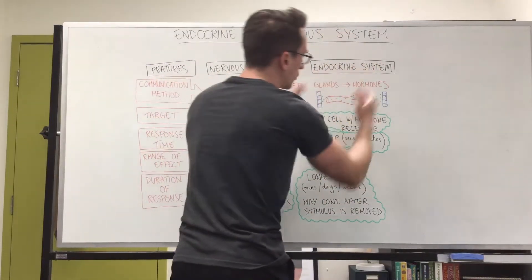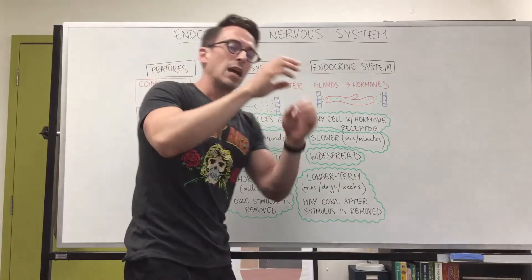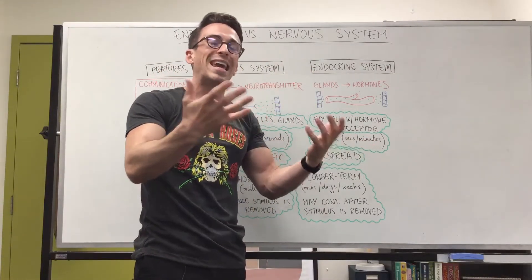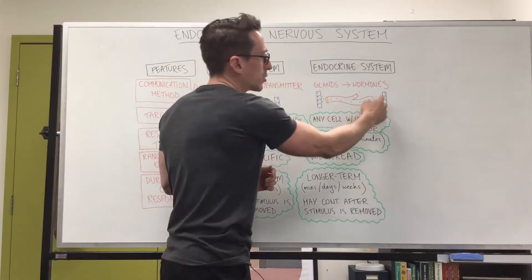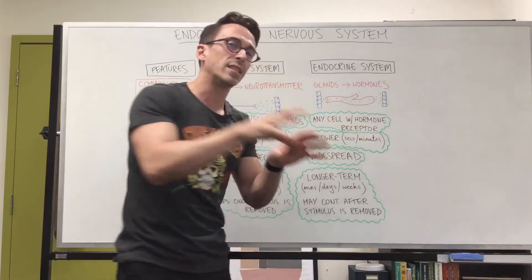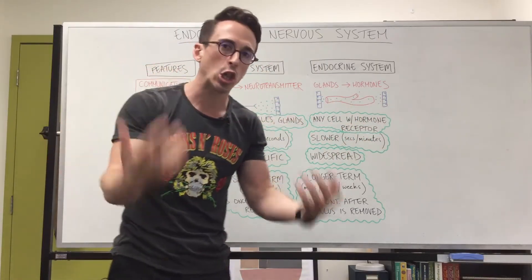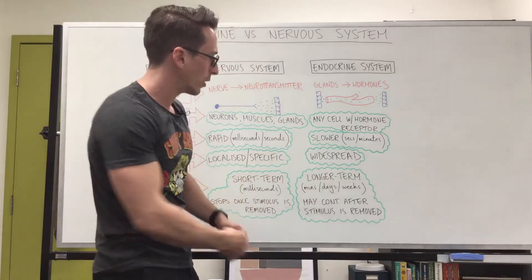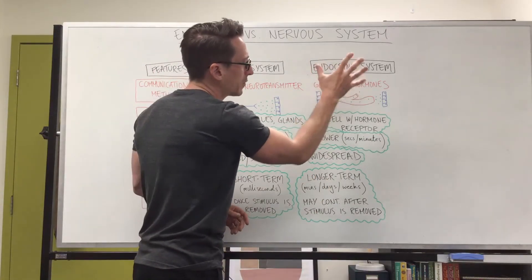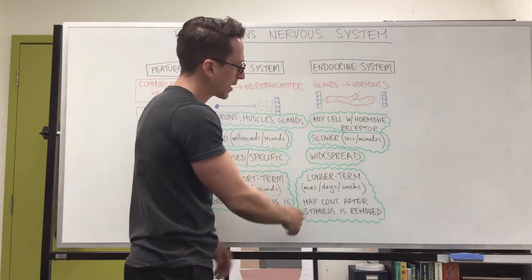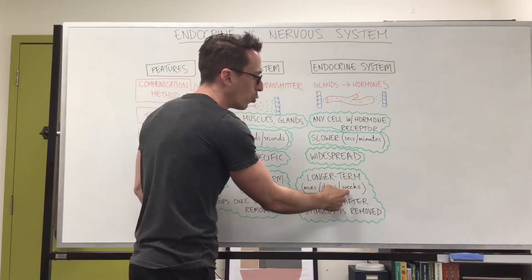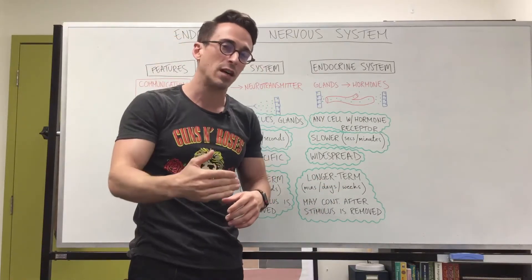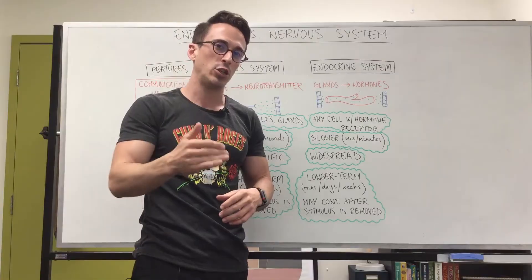When you look at the endocrine system, the bloodstream slowly releases these chemicals into the area outside the bloodstream called the interstitium, and it takes much longer for these chemicals to be reused and recycled. In fact, the effects of the endocrine system can last minutes to days to weeks, and can even persist after the stimulus has finished.